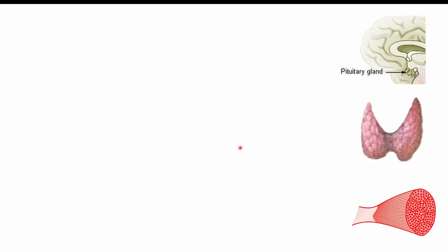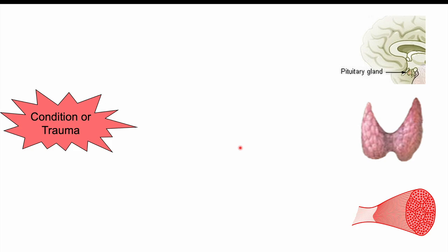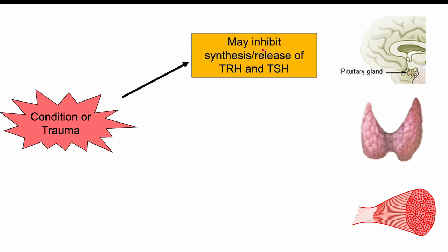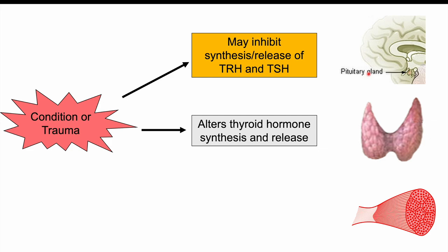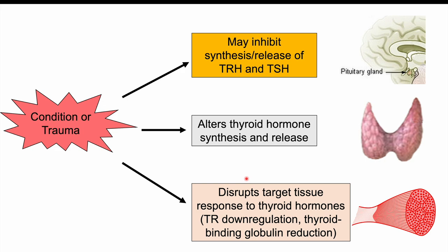The pathophysiology is not entirely understood, but what is believed to happen is the following. An underlying condition, trauma, injury, or surgery may lead to inhibition of synthesis and release of TRH (thyrotropin-releasing hormone) from the hypothalamus and TSH (thyroid stimulating hormone) from the pituitary gland. The condition may also cause alterations in thyroid hormone synthesis and release, including suppression of certain enzymes like deiodinases. Another possible mechanism is where the underlying condition disrupts the target tissue's ability to respond to thyroid hormones, through thyroid receptor (TR) downregulation or thyroid binding globulin reduction.